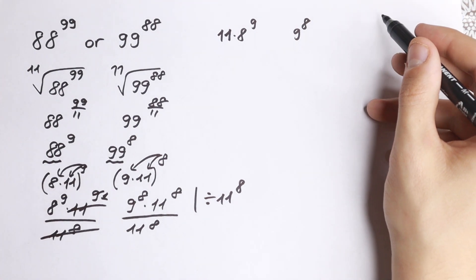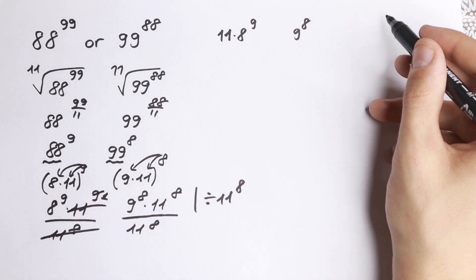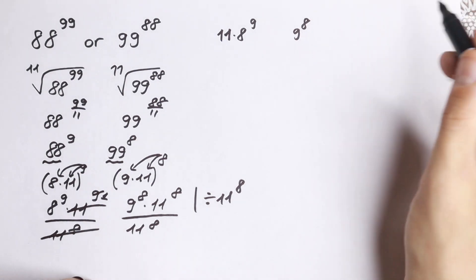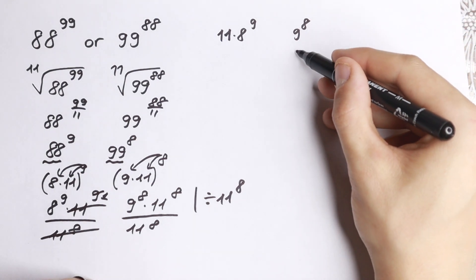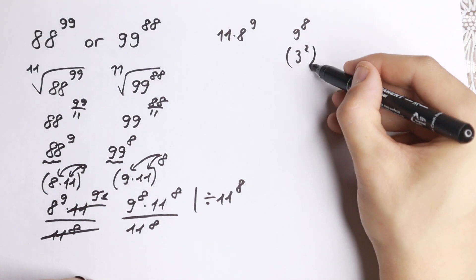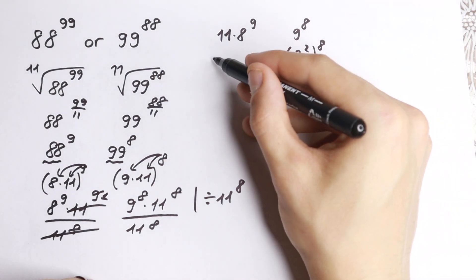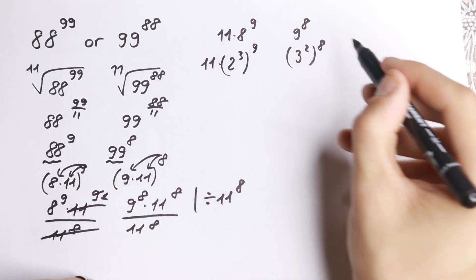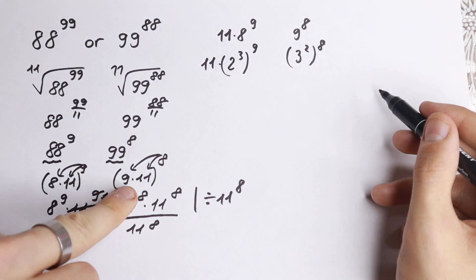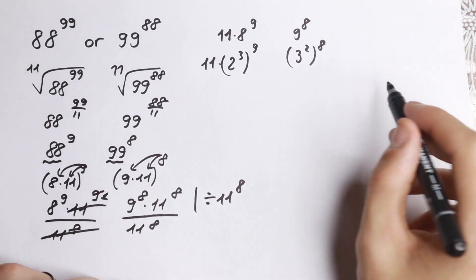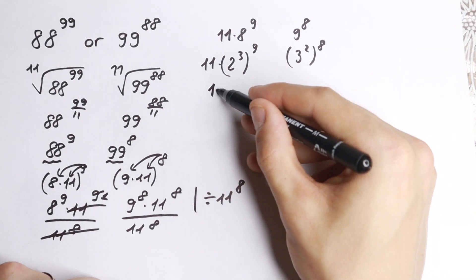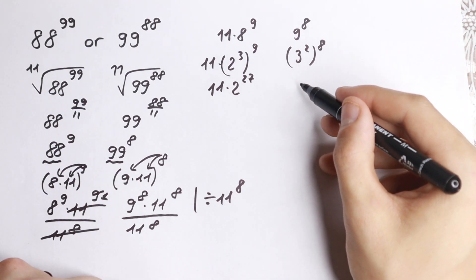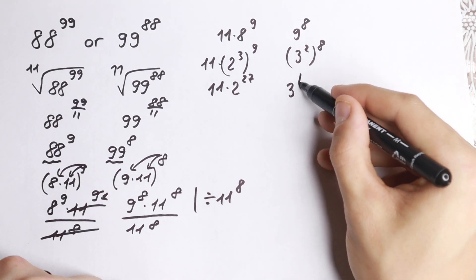So we now have 11 times 8 to the 9th versus 9 to the 8th. It's really useful to work with base 2 and base 3 here. We can write 9 as 3 squared, so 9 to the 8th becomes (3²) to the 8th power. And 8 as 2 cubed, so 8 to the 9th becomes (2³) to the 9th power. Applying the power rule, we get 11 times 2 to the 27th power on the left, and 3 to the 16th power on the right.